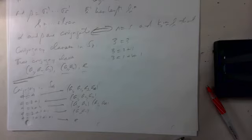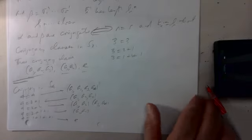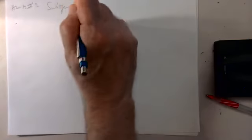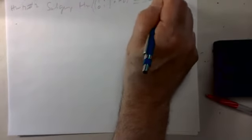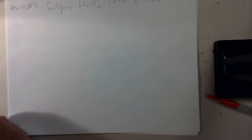Number two from homework 12: we look at the subgroup H of matrices of the form one n zero one in SL₂(ℤ), and we want to know if H is a normal subgroup.